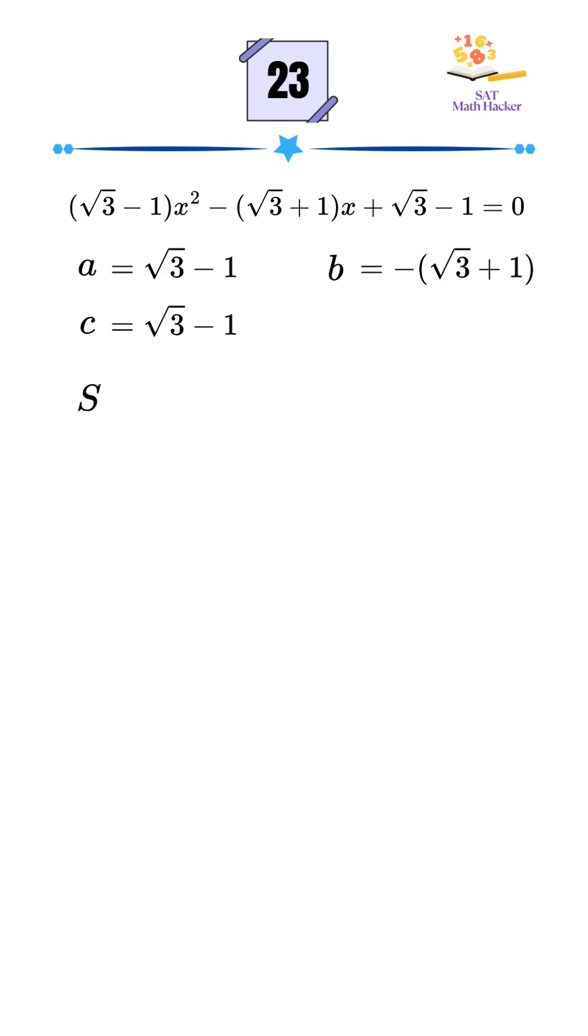Since the sum of the roots is negative b over a, we get square root of 3 plus 1 divided by square root of 3 minus 1.